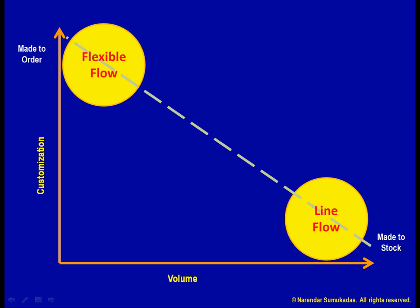Our choice of process needs to be related to what we are trying to do — in other words, what our competitive priorities are. Let us focus on the two ends of this diagonal and see what generalizations we can draw regarding which competitive priorities draw us towards which end of the diagonal.